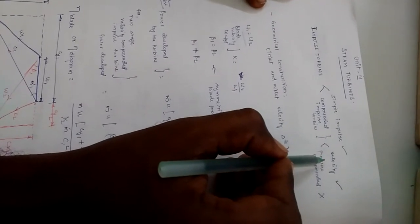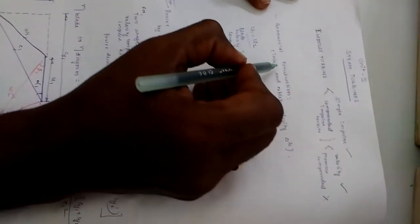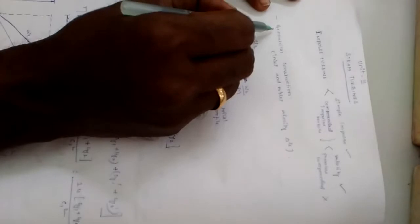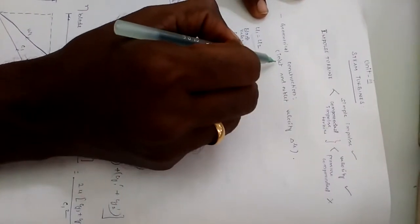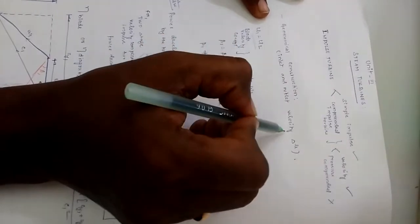Therefore, we are going to use a geometrical construction, and we know very well that in any turbo machine problem we will be drawing velocity triangles, both inlet and outlet velocity triangles.